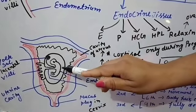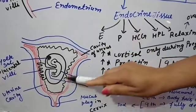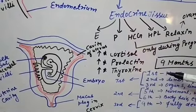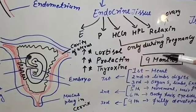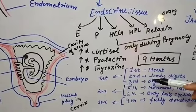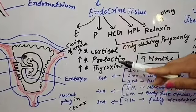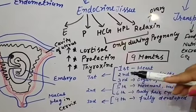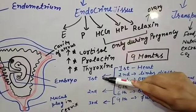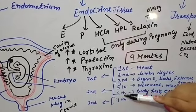The gestation period in humans is 9 months. These 9 months are divided into 3 trimesters, each of 3 months. The first trimester covers months 1 to 3, the second trimester covers months 4, 5, and 6, and the third trimester covers months 7, 8, and 9.